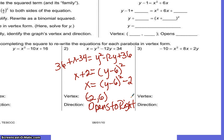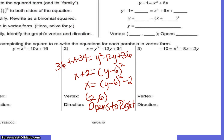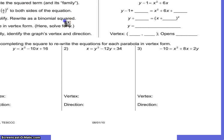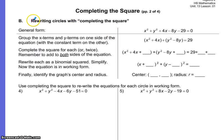Now go ahead and work number 3 on your own — pause the video if you need more time. On the next page, we're going to talk about the general form and how to rewrite circles. On the last page we rewrote parabolas; now we're focusing on completing the square with circles.